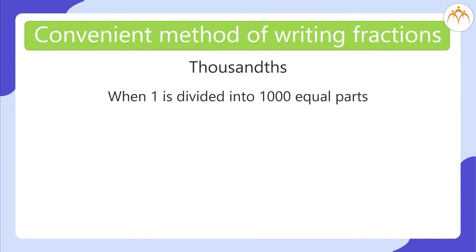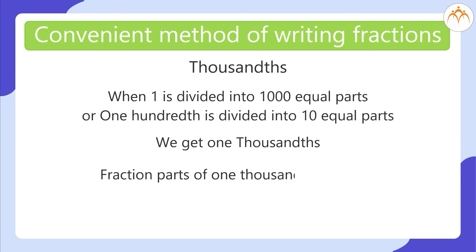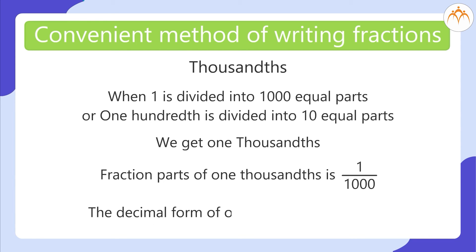When 1 is divided into 1000 equal parts, or 1 hundredth is divided into 10 equal parts, we get 1 thousandth. The fraction form of 1 thousandth is 1 divided by 1000. The decimal form of 1 thousandth is 0.001.